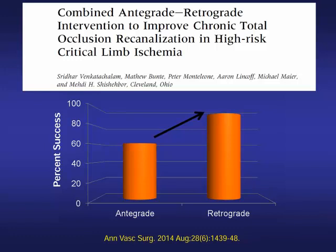We published our work and looked at our own experience with complex patients, having a low threshold to go retrograde. We saw that we could increase our success rate from about 65% with antegrade to about 93% with retrograde. We don't spend two hours trying antegrade and then bring the patient back. We actually prepare the leg at the time patients come — patients with CLI. We clean the leg from knee down all the way to the toes, so they're prepared for the retrograde approach.